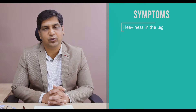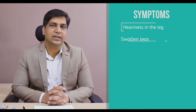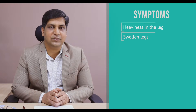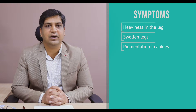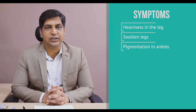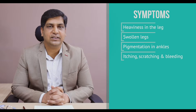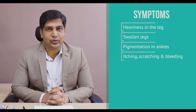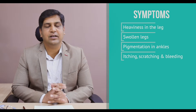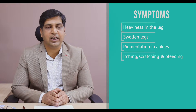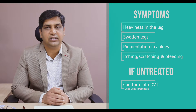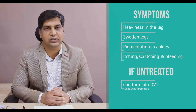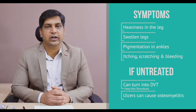If neglected, more advanced symptoms develop. The leg gets swollen due to venous pressure causing edema. Then black pigmentation appears around the ankle joint due to hemosiderin stasis, which causes itching. Scratching leads to ulcer formation, which will not heal unless the varicose vein is treated. Further neglect can cause bleeding from the high-pressure veins, deep vein thrombosis (DVT) that can travel to the lungs or heart, and ulcers extending to the bone causing osteomyelitis.